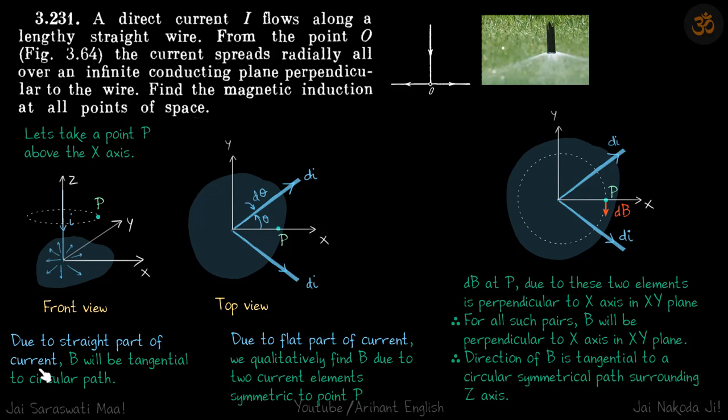Due to straight part of the wire, which is this part, B will be tangential to this circular path. This we already know. Due to symmetry, due to this straight wire part alone, the field here will be tangential to the circular path.